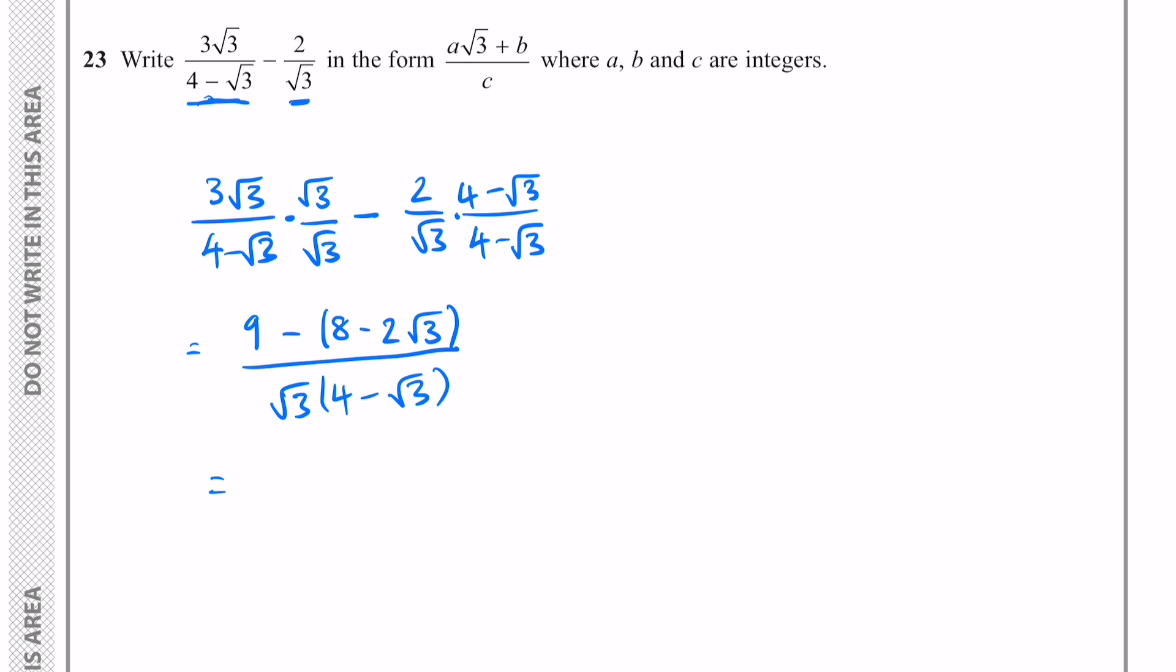Okay let's go ahead and keep simplifying. 9-8 is 1 and negative negative 2√3 is plus 2√3, and this is over 4√3 plus, sorry not plus, subtract 3. Got a bit excited there.